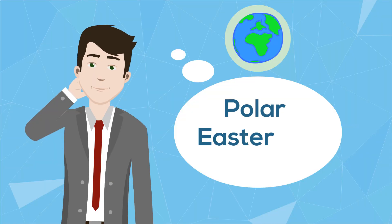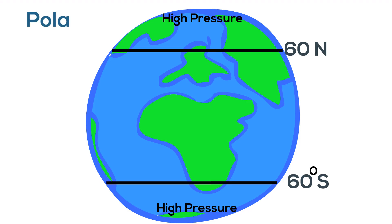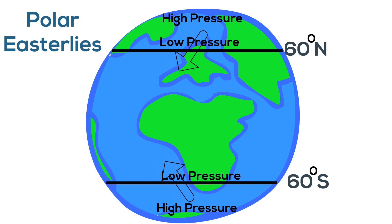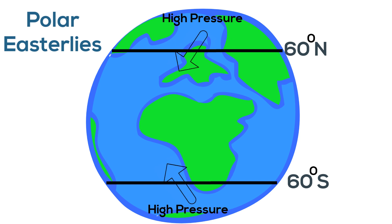First, Polar Winds. These begin near the north and south poles. Cold air in the winter sinks towards the ground, creating a high pressure area at the poles. Winds form as they move from the high pressure area near the poles towards the low pressure areas 30 degrees below. These winds blow from east to west.